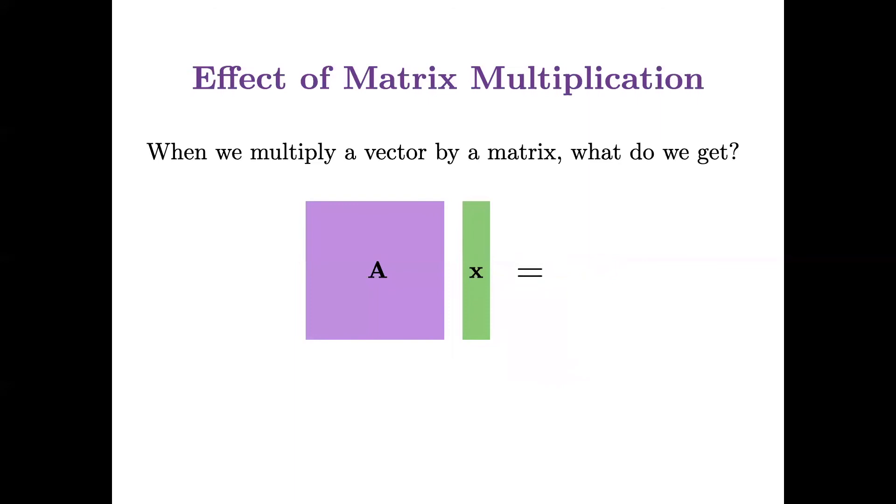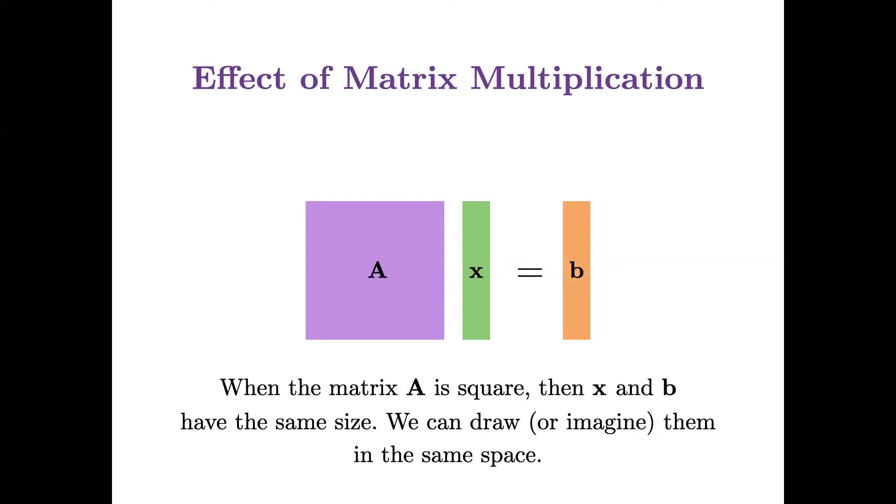So, I'll start with a simple question. If I multiply a vector by a matrix, what do I get? Another vector. Now, when that matrix A is square, same number of rows and columns, then x and b have the same size. So we can draw or imagine them in the same space.